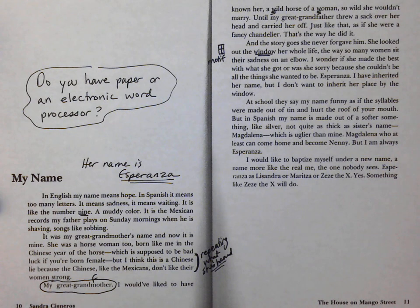I wonder if she made the best with what she got or was she sorry because she couldn't be all the things she wanted to be. Esperanza, I've inherited her name but I don't want to inherit her place by the window. That young girl knows something already. She's heard the story of her great-grandma and she knows that's not going to be me.